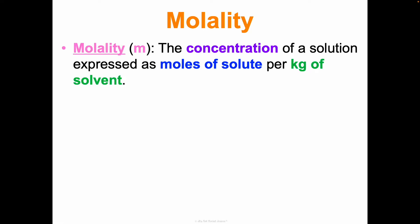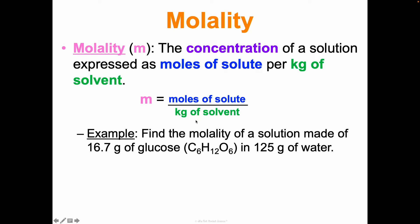Molality is another way to express concentration - it's the moles of solute per kilogram of solvent. So we're relating moles to a mass here. The equation is: moles of solute over kilograms of solvent. Example: find the molality of a solution made of 16.7 grams of glucose and 125 grams of water.